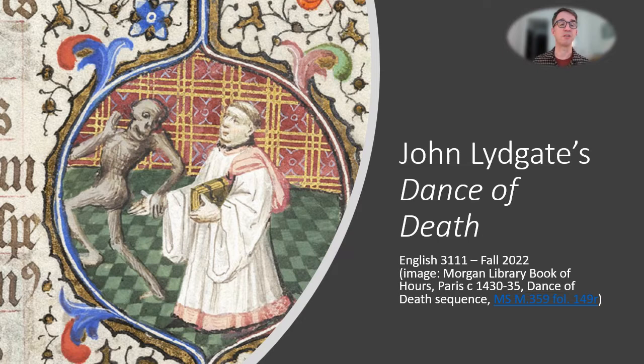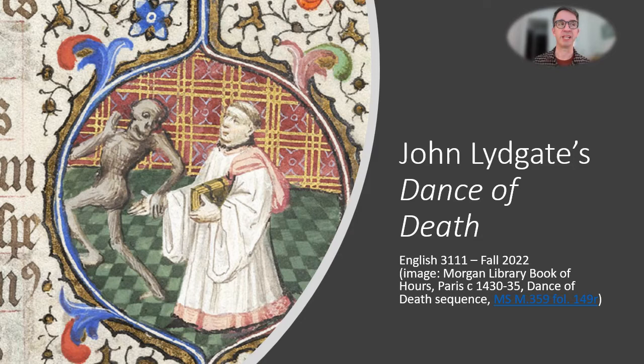Here's from a book of hours produced in Paris between 1430 and 1435, which is here in New York at the Morgan Library. You can look at the whole thing online, or if you want to try, you might be able to see it in person. Here is a cleric of some sort being led away by death, and one thing you'll notice is how kind of stiff and formal the cleric is and how lively death is. Death seems to have all the life in this, and the cleric seems to be robotically going along with his job, and we can talk about that more in class.